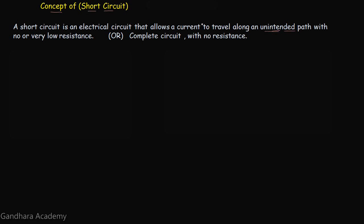The current in a short circuit is very high — a high current flows through it. By no resistance or very low resistance, we mean that the resistance across a short circuit is equal to zero ohms.